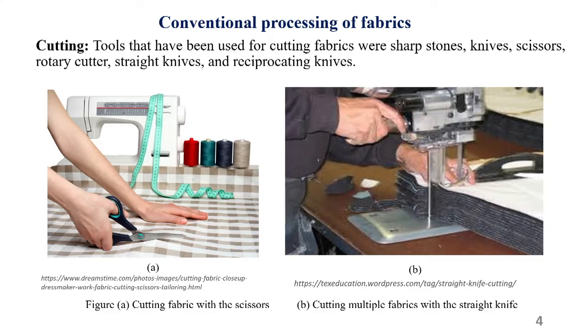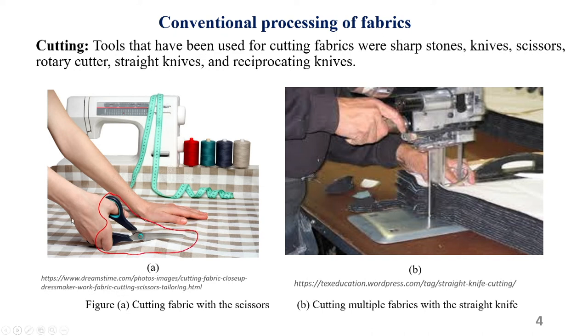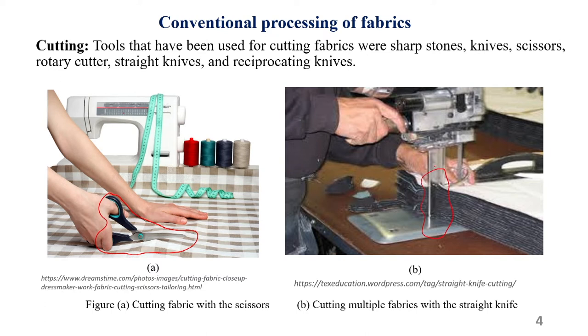Conventionally, we process fabrics by cutting using mechanical tools. The scissor is a very simple and common tool used at household and industrial applications. In industrial applications we also use straight knives — automated knives that are continuously reciprocating. By using such a knife arrangement we can cut multiple fabrics at one time. You can notice the multiple fabrics stacked over each other being cut by the straight knife.